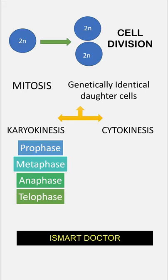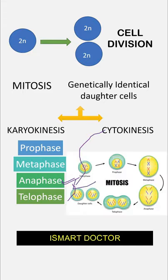Cytokinesis can occur separately. Anaphase and Telophase are the later stages, and cytokinesis follows. Together, these processes complete mitosis.